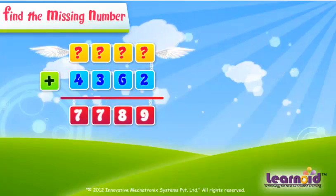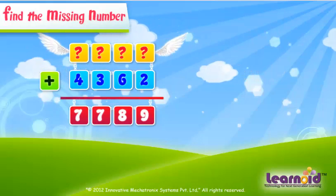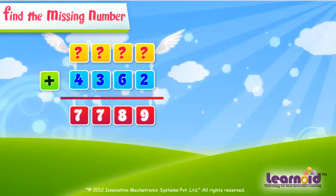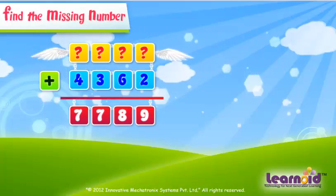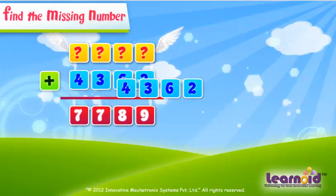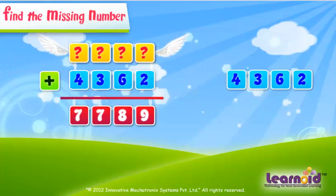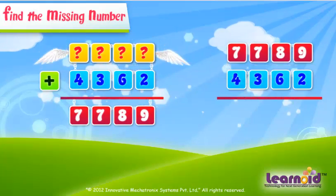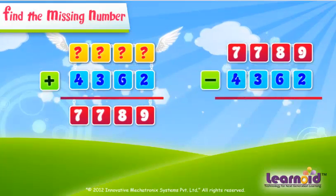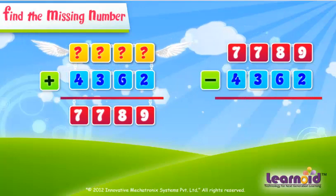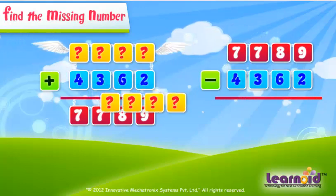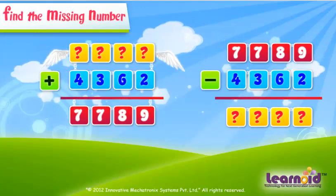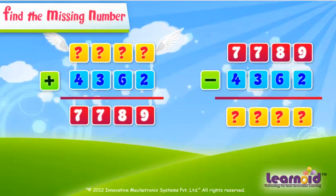If we have to find the first number, we have to subtract the second number from the sum of numbers. The answer will be the first missing number. Now subtract them.